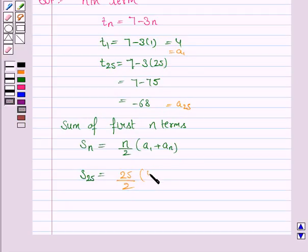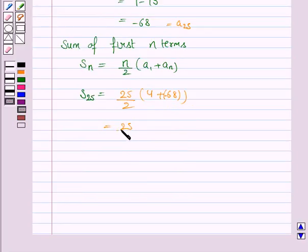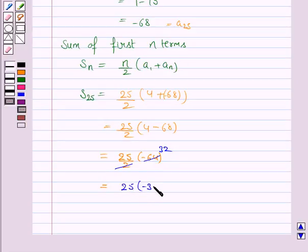So it is 4 plus minus 68. So we have 25 by 2 into 4 minus 68. So this is again equal to 25 by 2 into minus 64. Now 2 into 32 is 64, so we have 25 into minus 32 which is equal to minus 800.